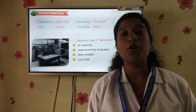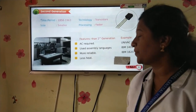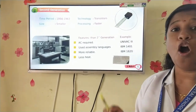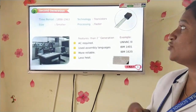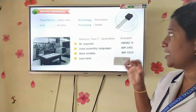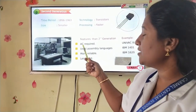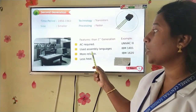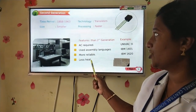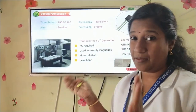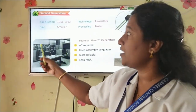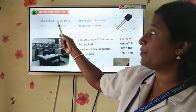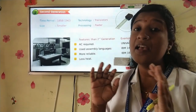Now let's have a look at the second generation of computers. In the second generation, they used transistors instead of vacuum tubes. This transistor has no filament, so the heat produced is very less. The features are: they used assembly language, were more reliable, and produced less heat. Compared to first generation computers, the size of the system is a little bit smaller. The time period is from 1956 to 1963.